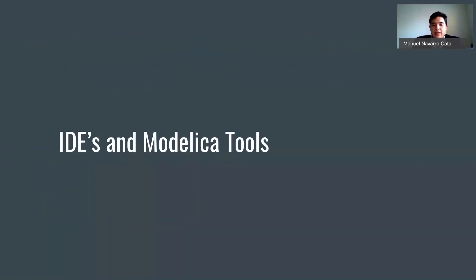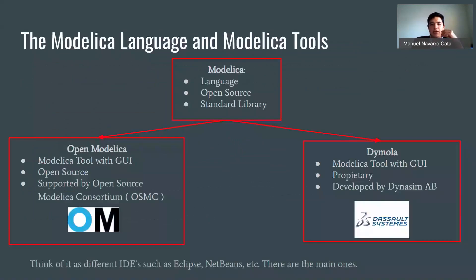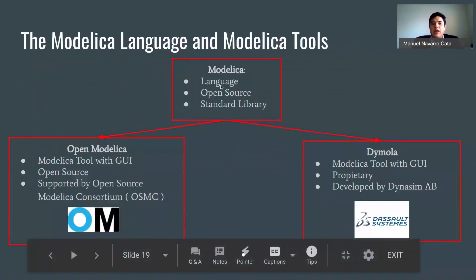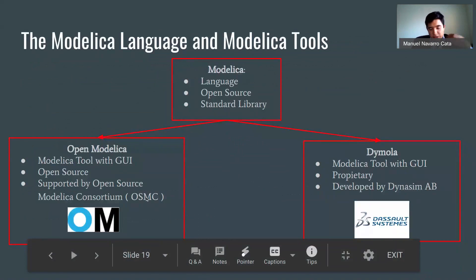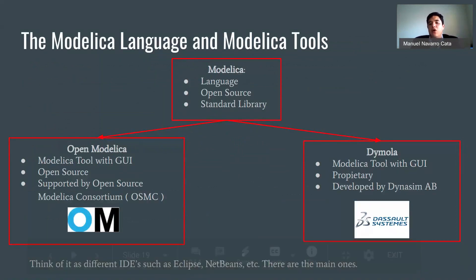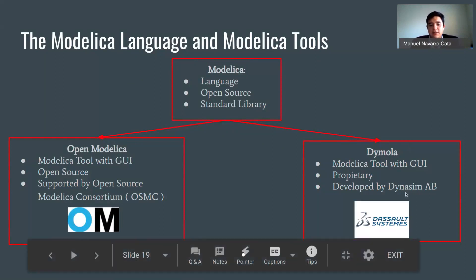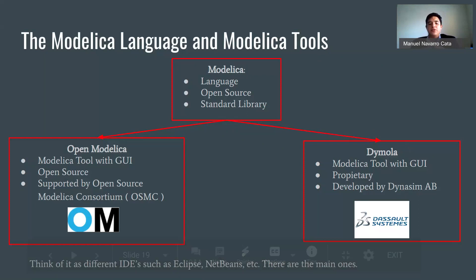Next, I want to talk a bit about IDEs and Modelica tools. Modelica is a language with an open-source standard library, but we also have open-source tools such as OpenModelica, which is a tool with a GUI supported by the OSMC with continuous releases that anyone can use for free. There's also Dymola, which is proprietary, has its own libraries, and was developed by Dassault Systèmes. You can think of these like Eclipse or NetBeans — many different IDEs for you to be able to program.